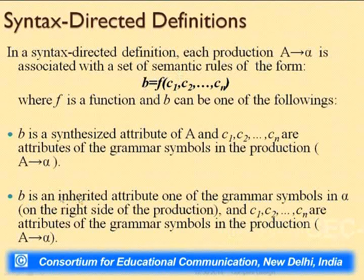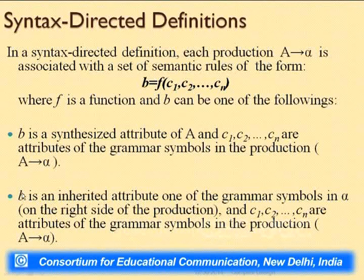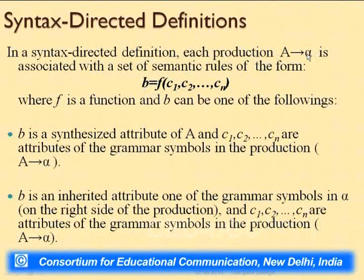In contrast, if B is an inherited attribute, then B is an attribute of one of the grammar symbols in alpha (a child), and C1 through Cn are attributes of the remaining grammar symbols in that production. Informally: a synthesized attribute is an attribute of the parent whose value depends on the children's attributes; an inherited attribute is an attribute of a child node in a subtree whose value depends on either its parent or its siblings.